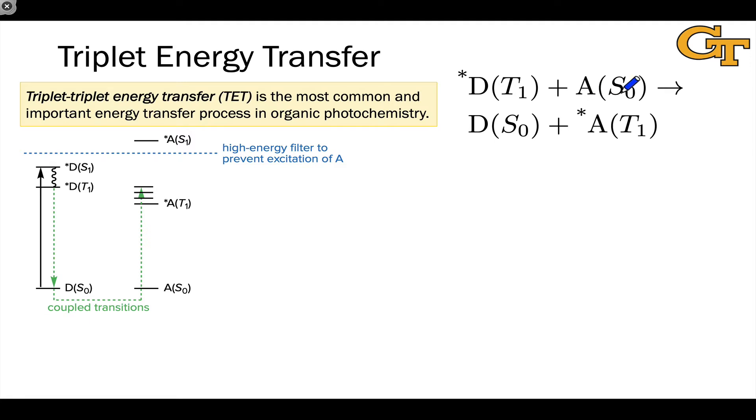Now, this may look spin forbidden in that A in a singlet state goes to A star in a triplet state. However, notice also that D star in a triplet state goes to D in a singlet state. So if we look at the overall spin multiplicity of D star and A on the reactant side and D and A star on the product side, we see that overall, no change in spin multiplicity has occurred since we still have one singlet and one triplet on the product side.